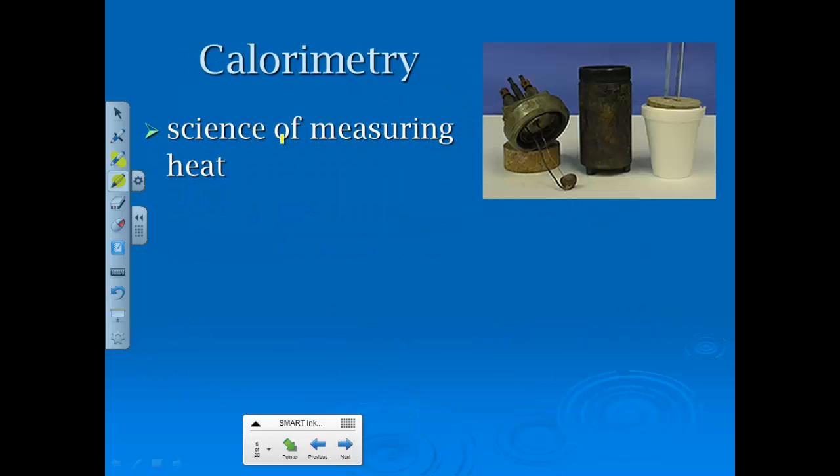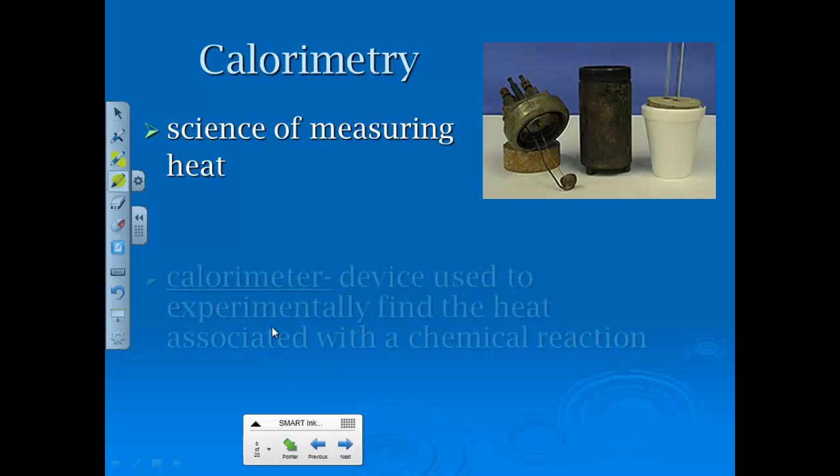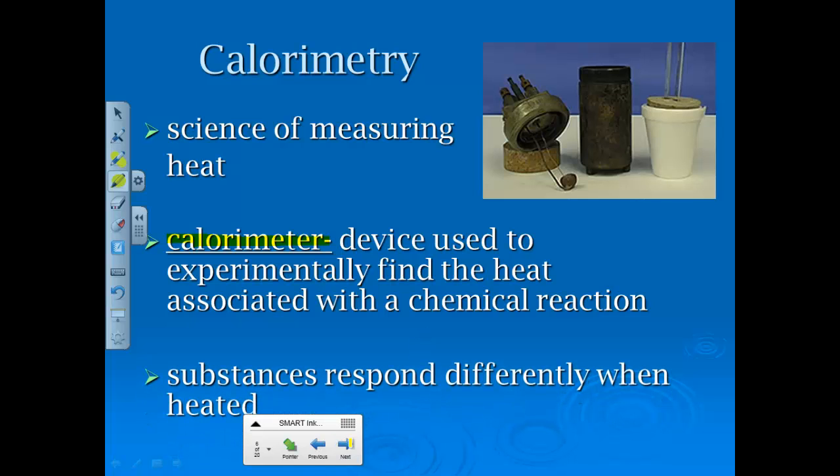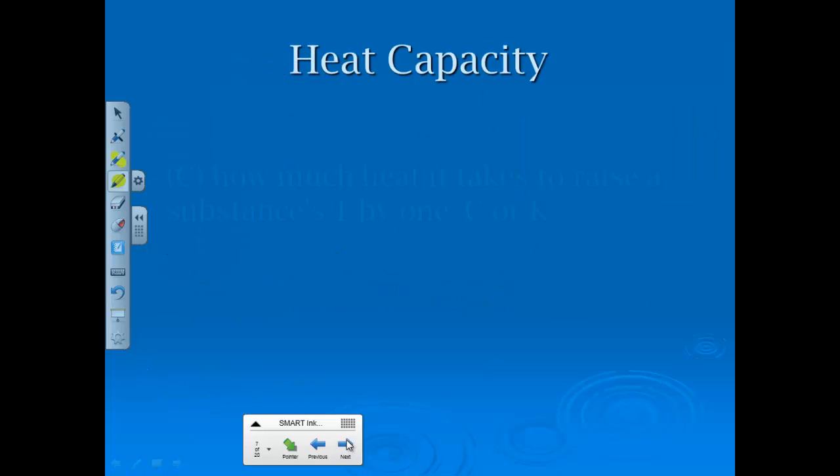The way that we study this is through what's called calorimetry. This is the science of measuring heat. A calorimeter is simply a device used to experimentally find the heat associated with a chemical reaction. Substances will respond differently when heated. Some will combust and some will react. Some will not. The calorimetry and the thermo piece is that third part of the formal chemistry definition of studying the heat and energy transfers that go along with reactions.